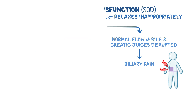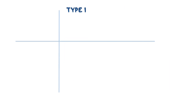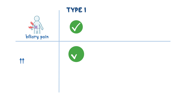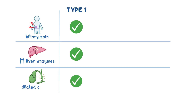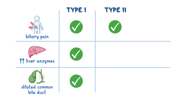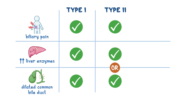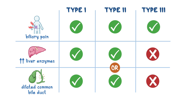There are three types of SOD. Type 1 consists of biliary pain, elevated liver enzymes, and a dilated common bile duct. Type 2 includes biliary pain and either elevated liver enzymes or a dilated common bile duct. And type 3 includes biliary pain only.